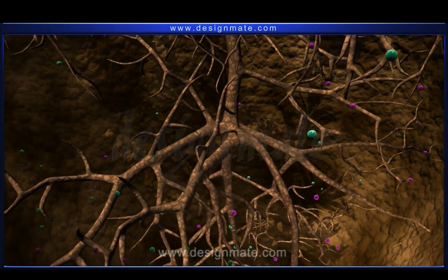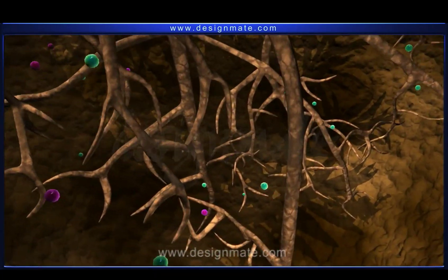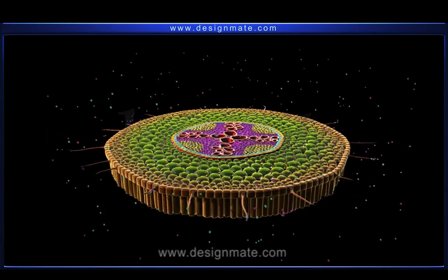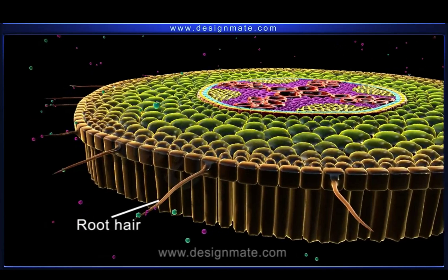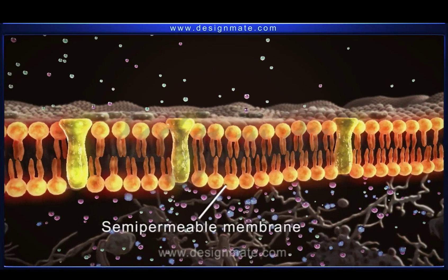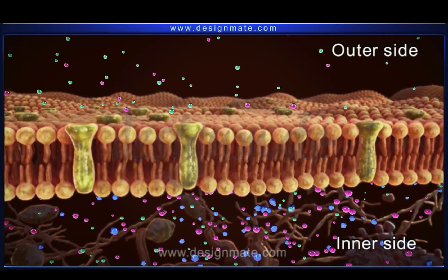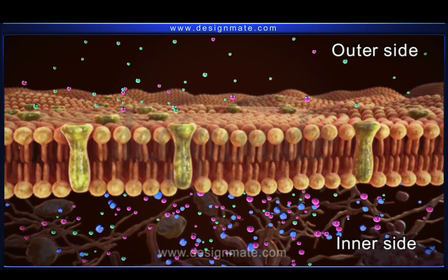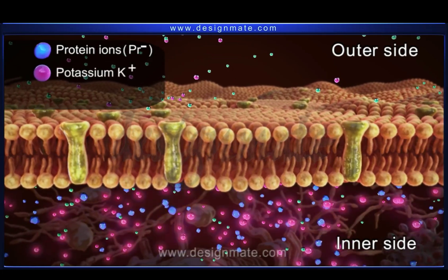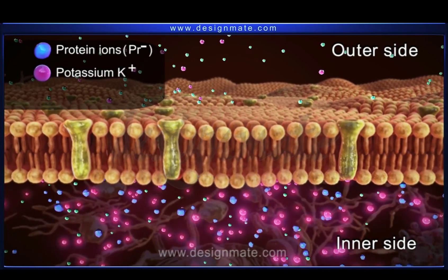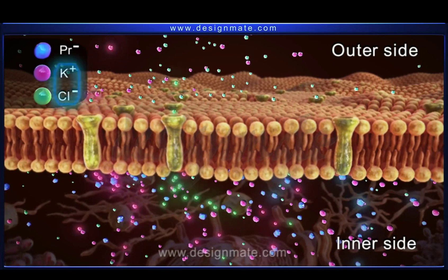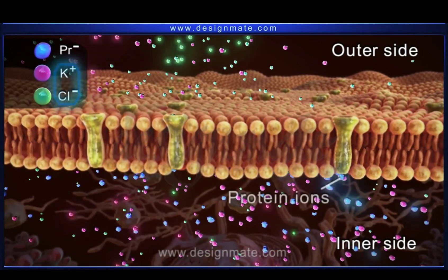These ions sometimes fail to distribute evenly across the two sides of the membrane. If we observe the roots of a plant closely, we see that it has presence of hair-like structures called root hair. The cell membrane acts as the semi-permeable membrane. The inner side of the membrane has presence of fixed ions or non-diffusable ions in the form of negatively charged protein ions denoted by PR- and K+ ions as cations. It also has presence of anions like chloride ions. The membrane is permeable to K+ and Cl- ions while it is impermeable to protein ions.